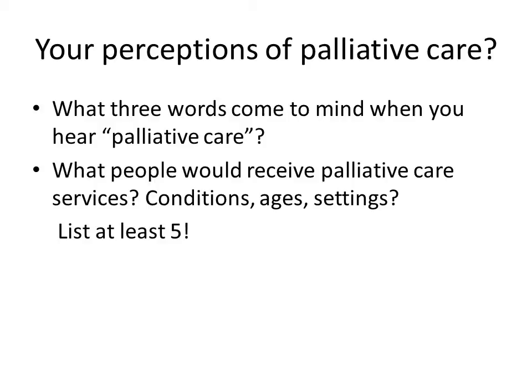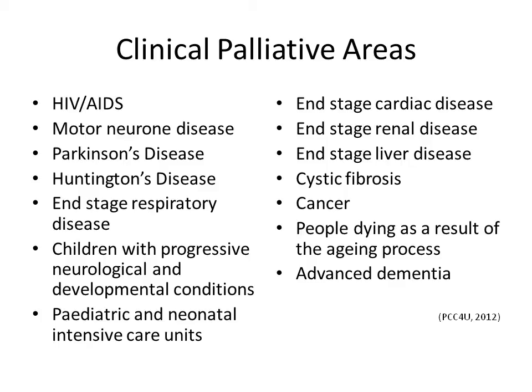To give you a little help with thinking about the types of conditions of people you might be working with, you can see from this slide that there is a whole range of different conditions. Obviously cancer is probably the one that springs most to mind, however there are all ages involved in palliative care — from premature neonatal babies in a special care unit, right up to people who are older adults with advanced dementia. There's a whole range of age groups as well as conditions, from progressive neurological conditions, HIV, chronic conditions such as renal disease or cardiac disease, as well as congenital conditions.